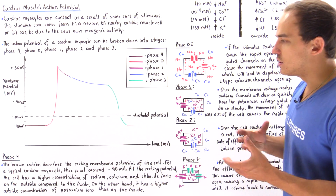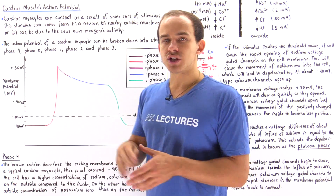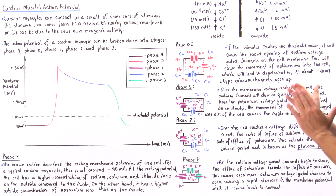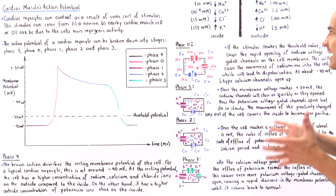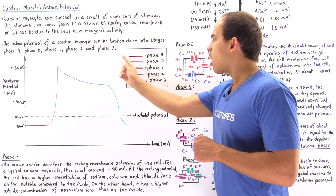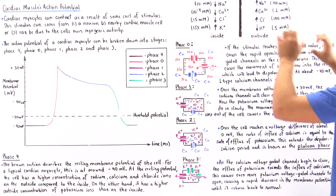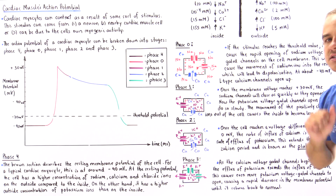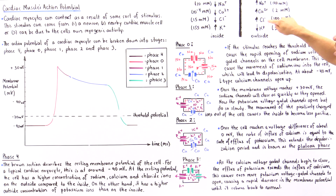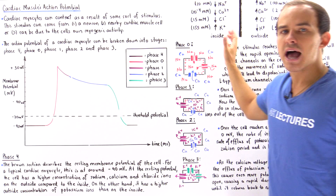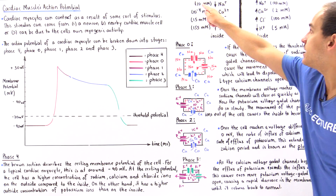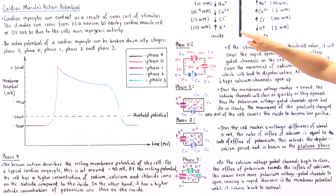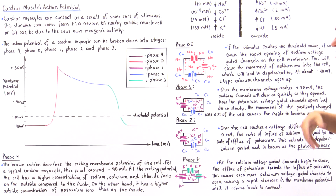Before discussing anything else, let's look at the relative concentrations of four different ions on the inside and outside of the membrane. When the cell is resting at phase four, we have a higher concentration of sodium, calcium, and chloride on the outside than on the inside. We have a lower concentration of potassium on the outside than on the inside. These relative concentrations are given in millimolar.